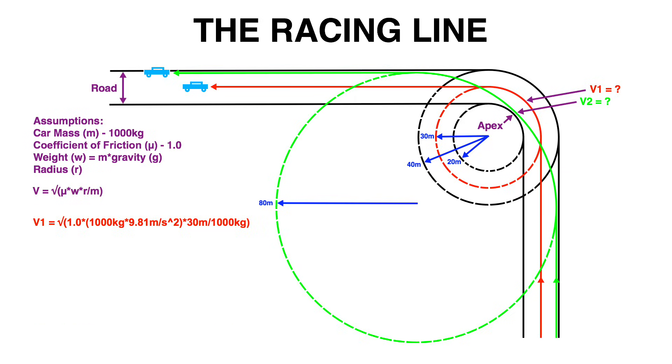Taking the first example velocity equals the square root of 1 times 1000 times 9.81 meters per second squared times 30 meters divided by a thousand kilograms this gives us a speed of 17 meters per second or about 62 kilometers per hour or 38 miles per hour.